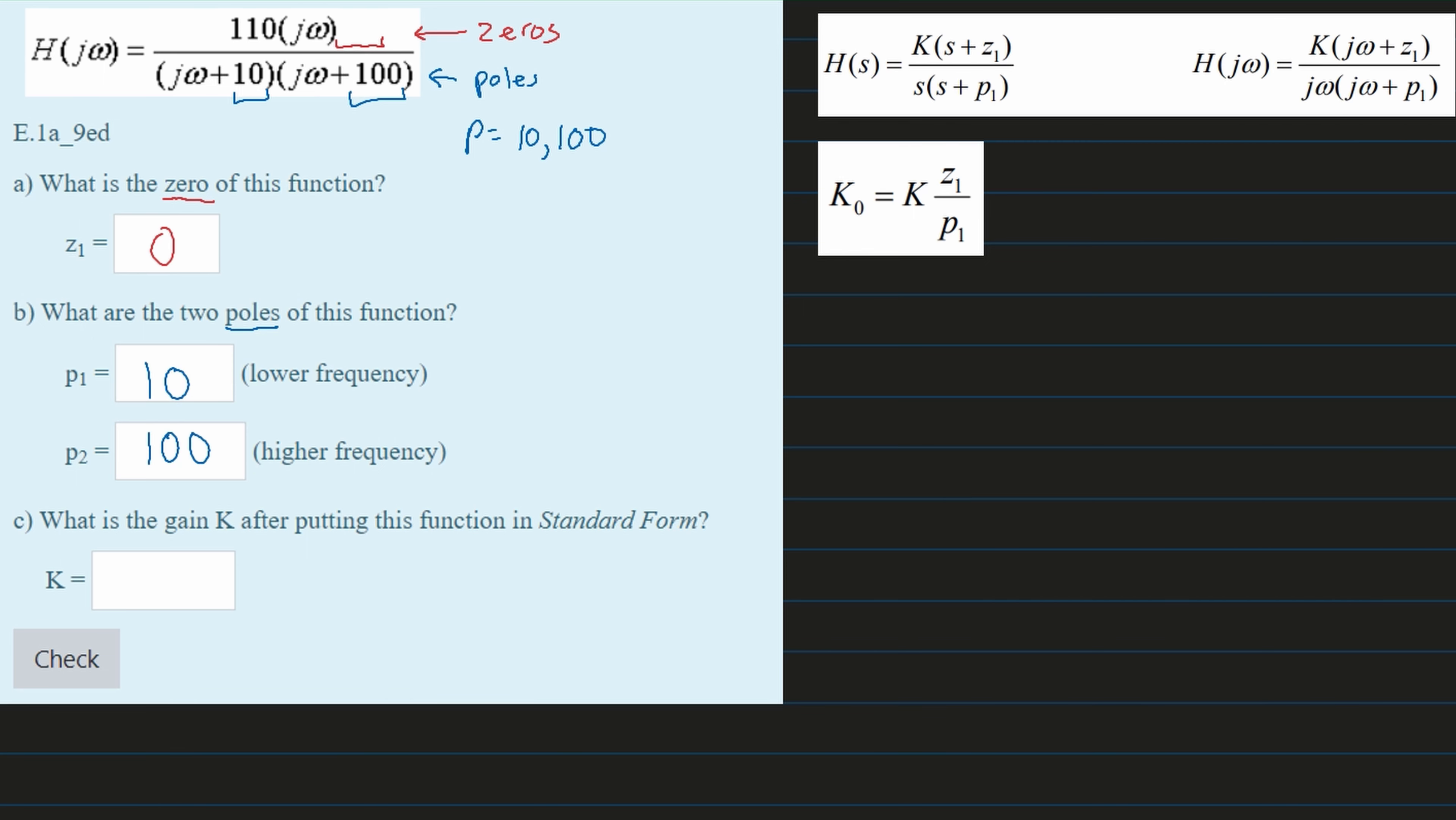Next, we're asked what is the gain K after putting this function in standard form? Well, if we were to put this in standard form, we would need to convert our jω to be an s. So all of these jω are going to be equal to an s. And you can think of s for standard form.